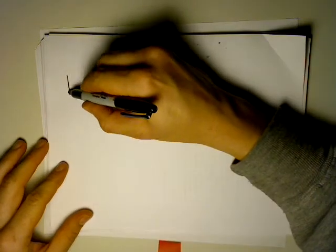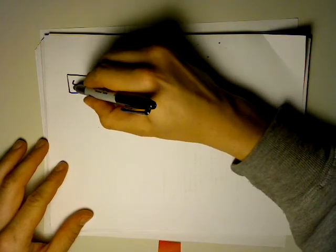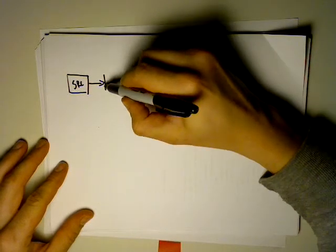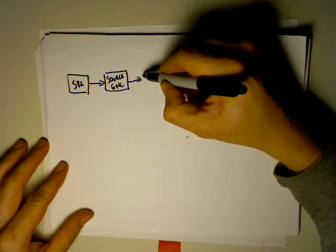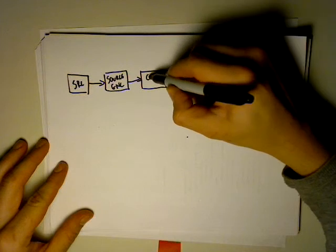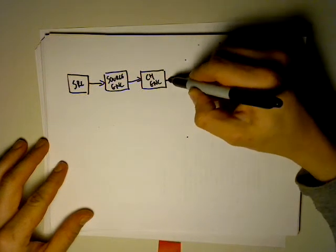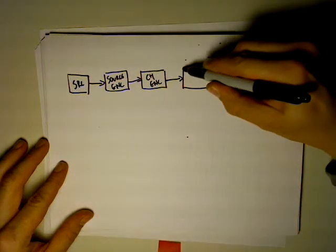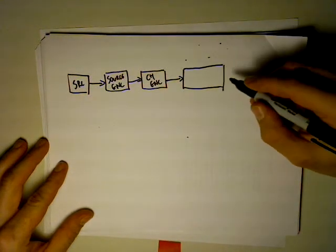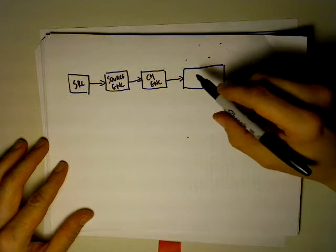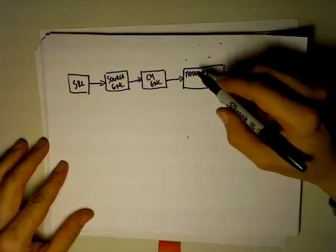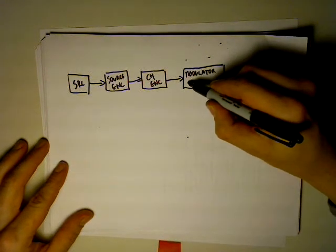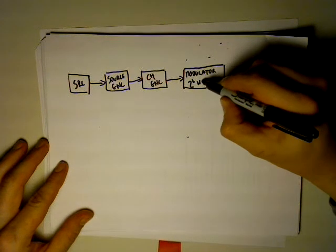Let's refer back to our transmitter model. We have our binary source, our source encoding, our channel encoding, and now the block we're going to be looking at this lecture and several others after it, which is called the modulator. What it does is it maps binary patterns to 2^B possible waveforms.